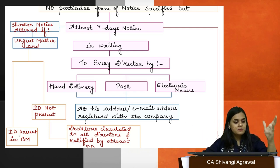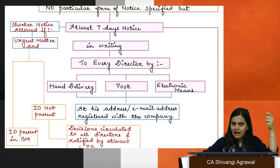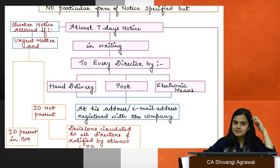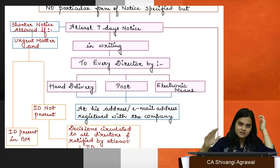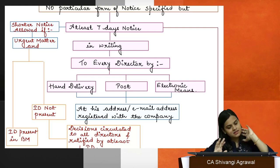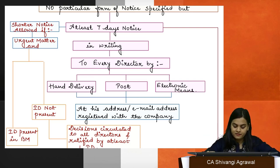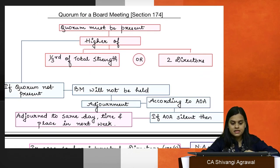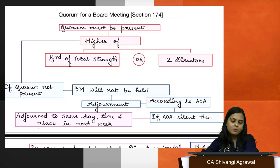Board meetings can be held on a holiday, outside business hours, outside the city or registered office, or even outside India. Section 173(4) covers the penalty provisions already discussed.